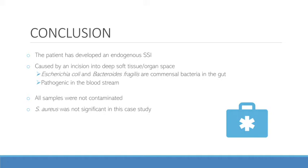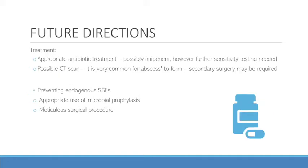In regards to treatment, the most suitable antibiotic to be administered is imipenem, as it was found sensitive to both Escherichia coli and Bacteroides fragilis and is therefore deemed most ideal. However, further sensitivity testing on these particular strains should be carried out to confirm effectiveness; otherwise, a combination of sensitive antibiotics may be useful. In addition, the patient must be monitored, as it is very common for an abscess to form after the infection, and if so, secondary surgery to remove it may be required.